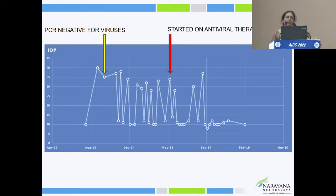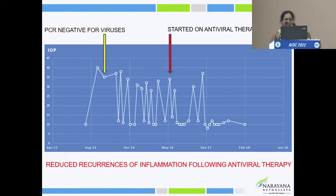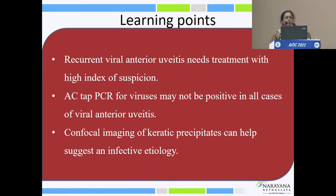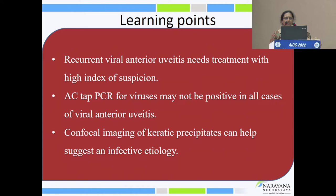Once we put appropriate antiviral therapy, it results in resolution of the inflammation. We are seeing more cases of CMV anterior uveitis in immunocompetent individuals now. The learning point: recurrent viral anterior uveitis needs treatment with high index of suspicion. AC tap PCR may not be positive in all cases — we need to repeat the test.